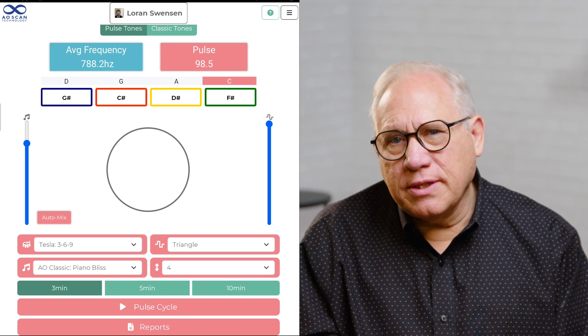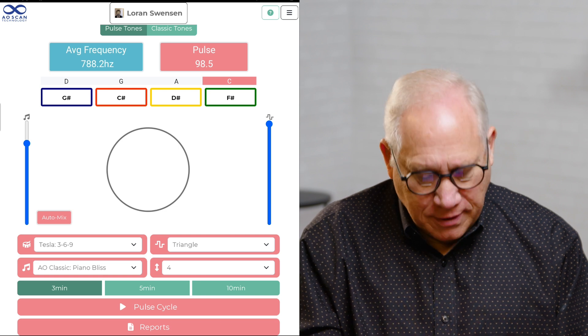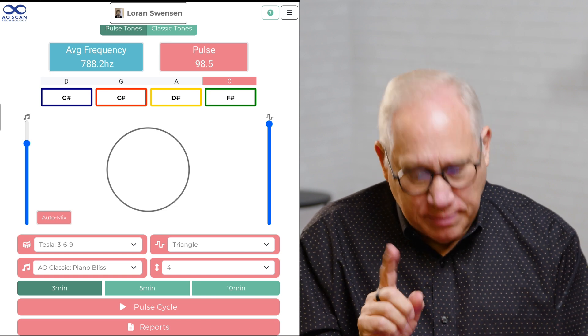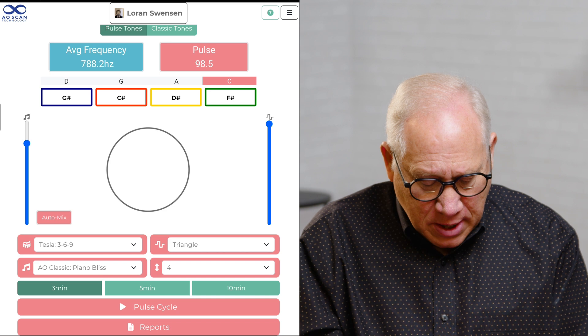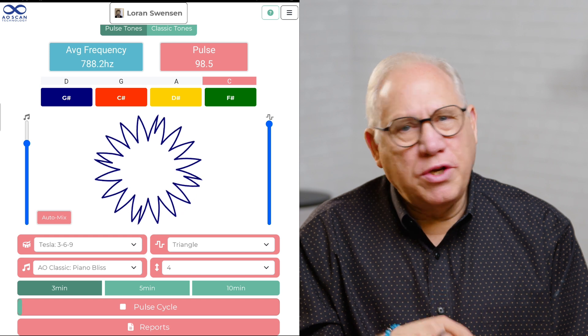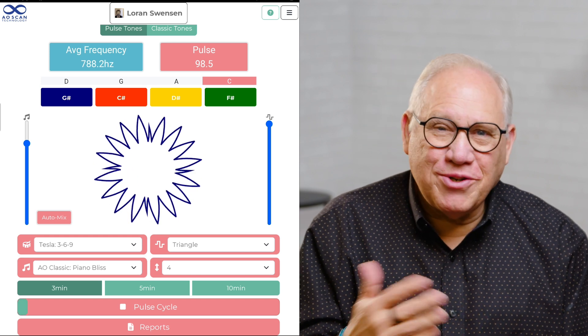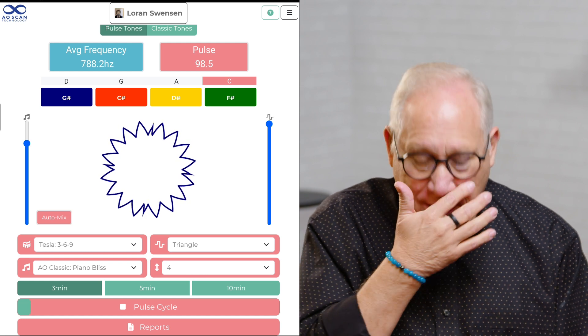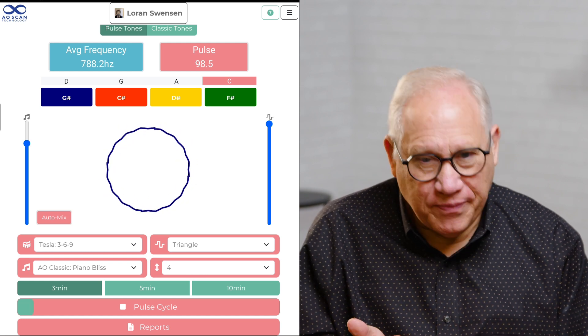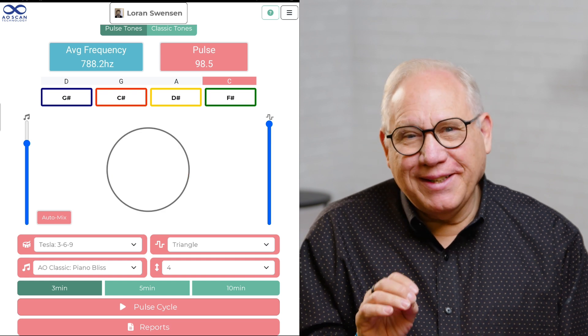The circle is just a display of what the frequency looks like. So I'm going to hit the three minute and the Pulse Cycle Start so you can see it. That's just showing you what that waveform looks like. You don't have to look at this, it's not going to do anything more or less if you watch or don't watch it.